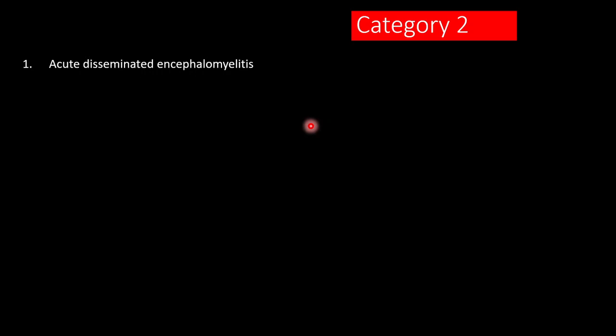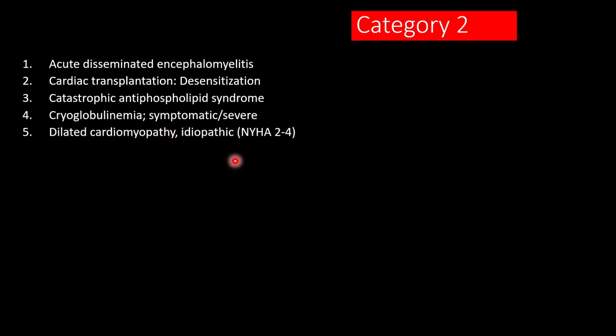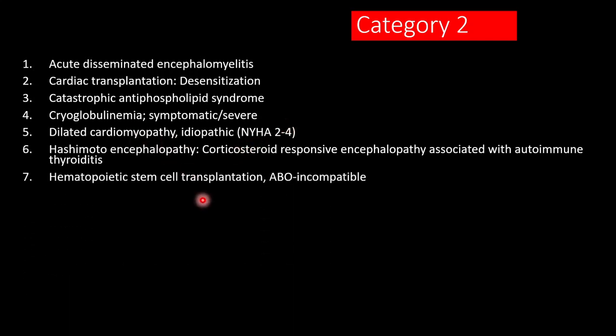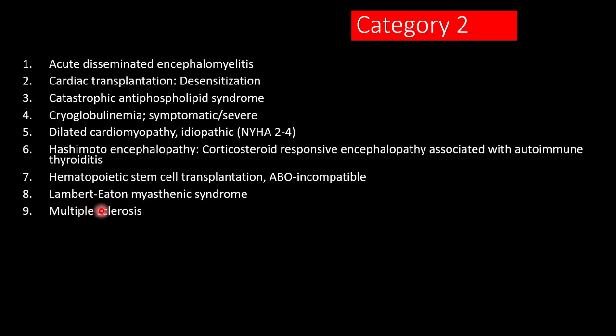Next is Category 2, where PLEX or plasmapheresis can be considered as adjuvant to primary therapy. This includes acute disseminated encephalomyelitis (ADEM), transplantation for desensitization, catastrophic antiphospholipid syndrome if the patient is not responding to any kind of immunosuppression, cryoglobulinemia to remove the cryoglobulins, idiopathic dilated cardiomyopathy where the patient is not responding, and Hashimoto encephalopathy.